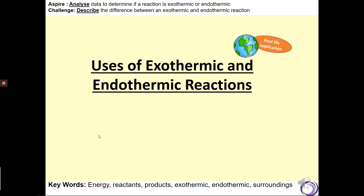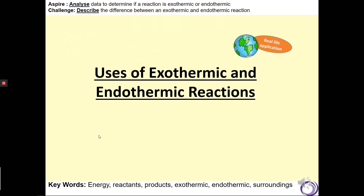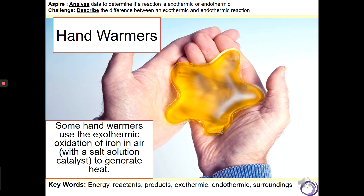So where might we use exothermic and endothermic reactions? Some of them, such as hand warmers, are very common. I'm sure most of you have either seen these or used these on a cold day to keep your hands warm. The way in which they work is that when we activate them, the chemical reaction occurs, which is exothermic. That releases heat energy, and that heat energy is what is used to warm up our hands.